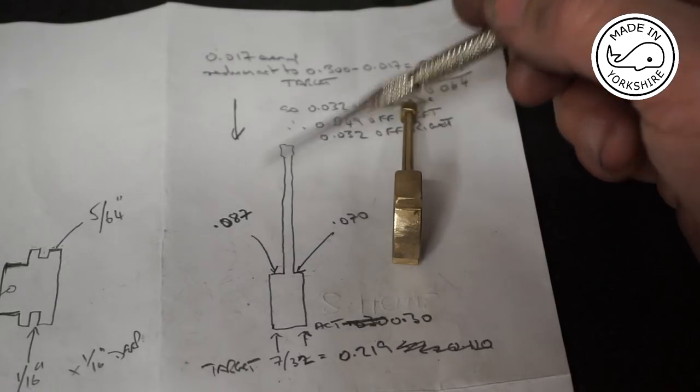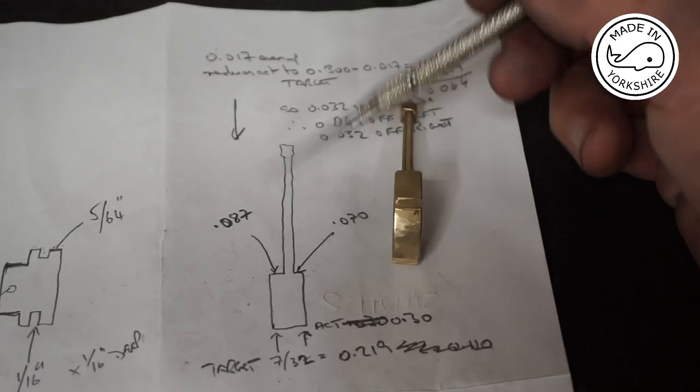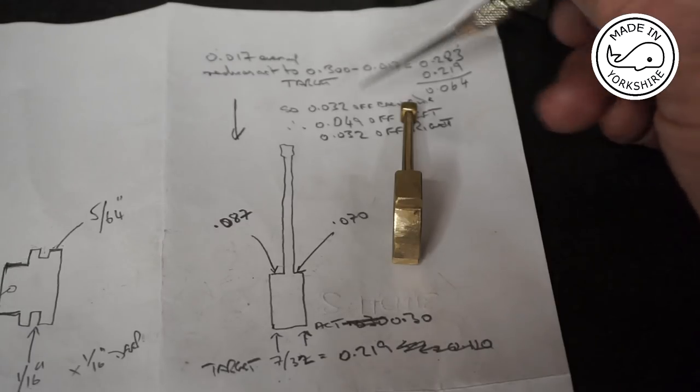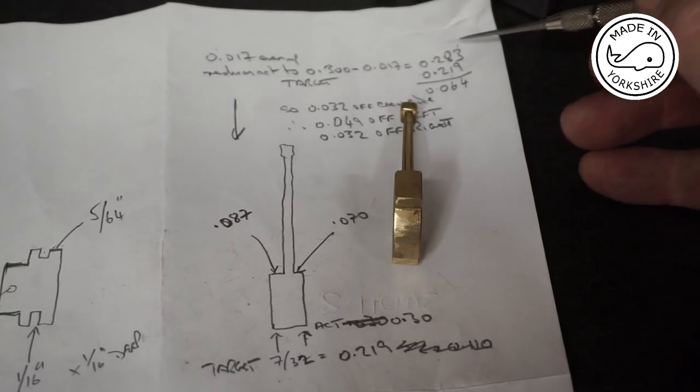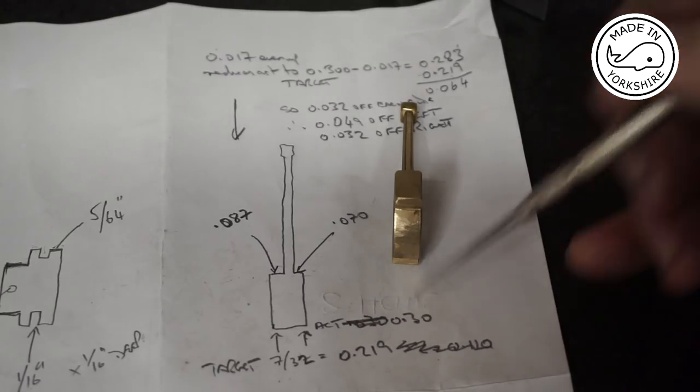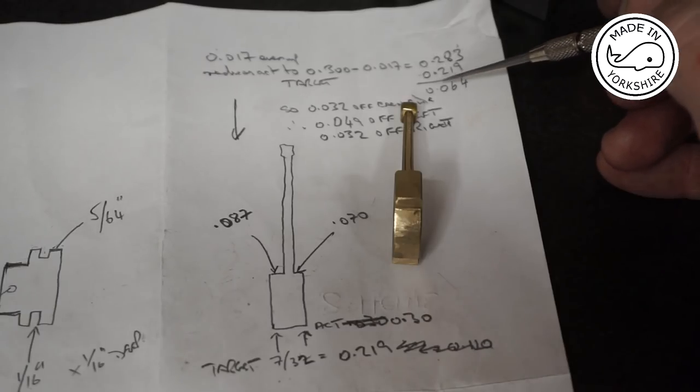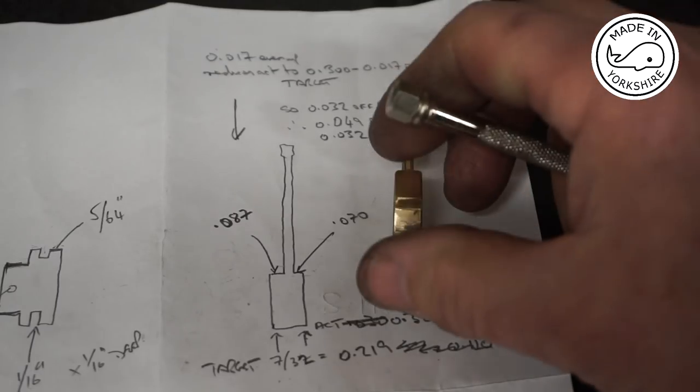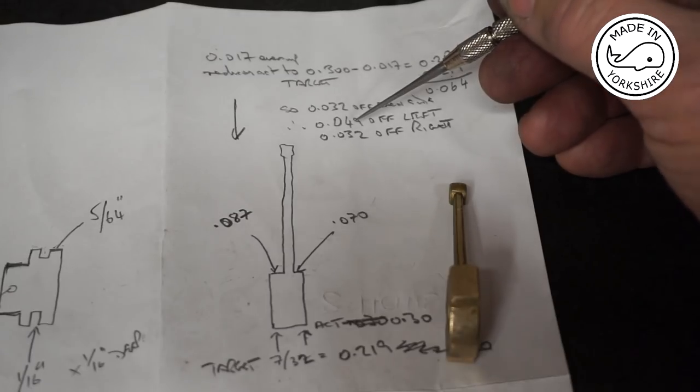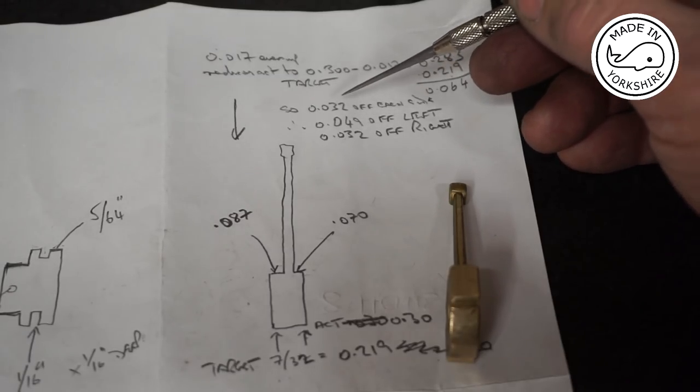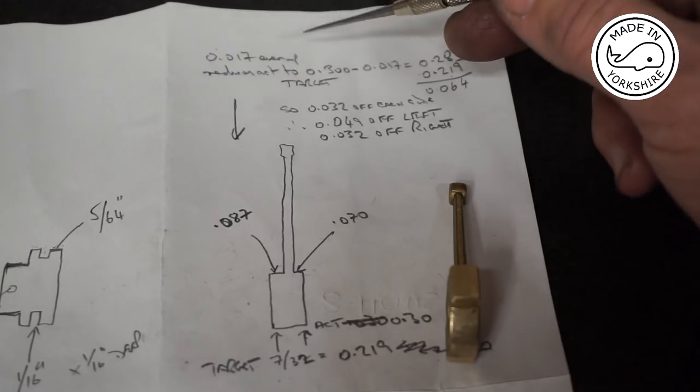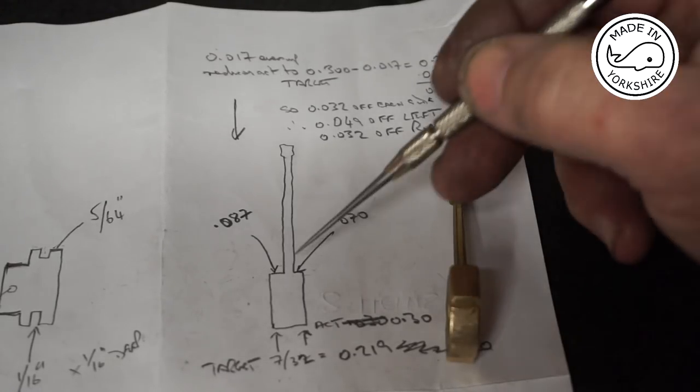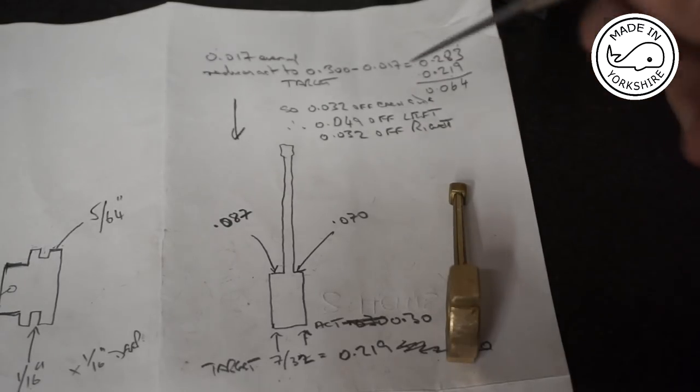This side is 17 thou oversize. So if I take 17 thou off here it'll even the sides up. That will result in the thickness being 0.283. Now my target is 0.219. So the difference being 64 thou. That means I need to take another 32 thou off each side. Therefore on the left hand side as it is now I need to take off 32 thou plus 17 thou which is 49 thou. And on the right hand side I need to take off 32 thou. Hopefully that will result in the upright being centred.